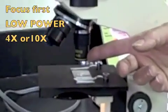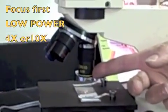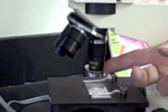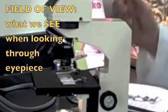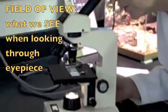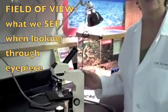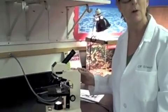Now, one reason we do that is because it has a very large field of view. What's the field of view? The field of view is what we see when we look through the eyepiece. When we're on low power, it's easier to locate a specimen because it looks smaller.